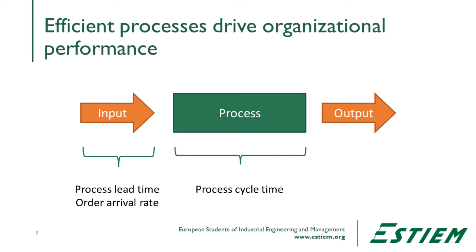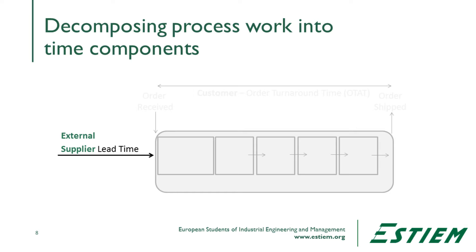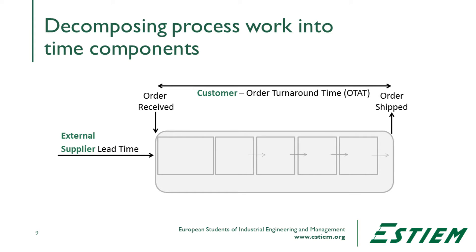If we're looking at a key measure of time, we'll have process lead time — that's the work that happens before the process begins. We can look at something like order arrival rate occurring at the beginning of the process. The process cycle time is the time it takes to transition one unit from the beginning of the flow to the end. The lead time we might think of as supplier lead time; for the customer, it's order turnaround time from when we receive the order until the process is done and ready to ship.